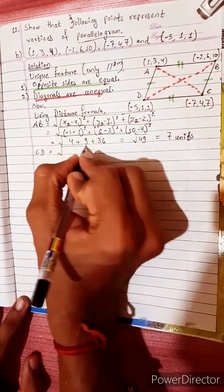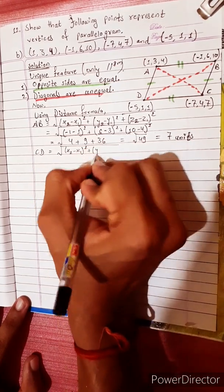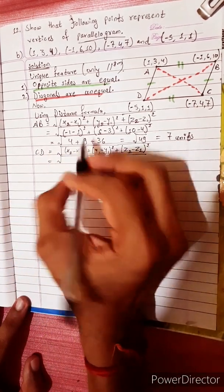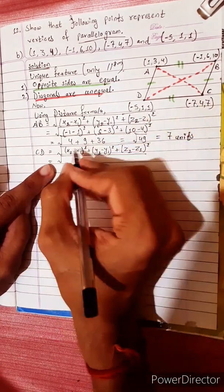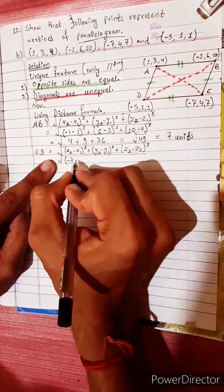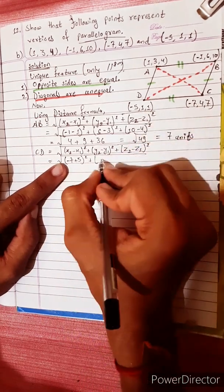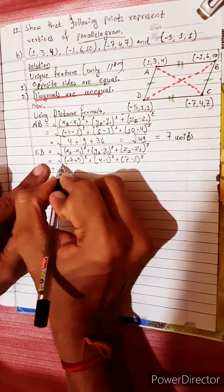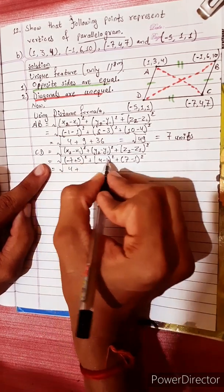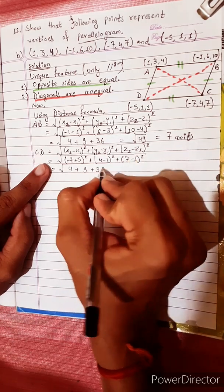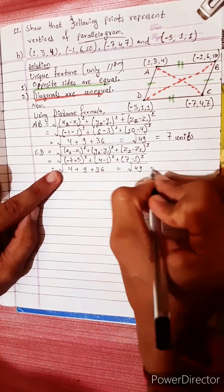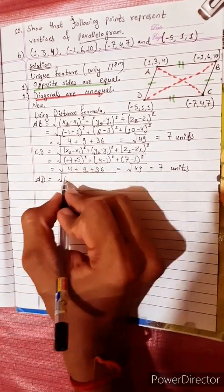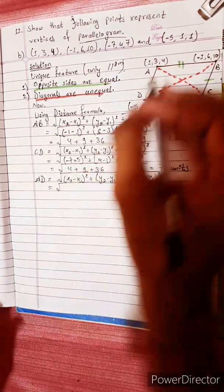Distance of CD using the formula: √((x2 - x1)² + (y2 - y1)² + (z2 - z1)²). Here x1 is C(-7, 4, 7) and x2 is D(-5, 1, 1). So (-5 - (-7)) = 2, squared is 4; plus (1 - 4) = -3, squared is 9; plus (1 - 7) = -6, squared is 36.